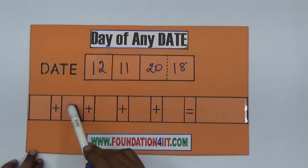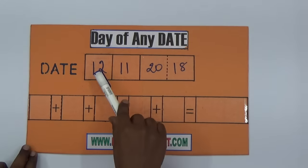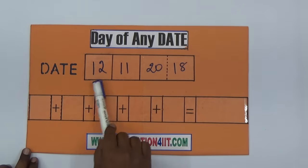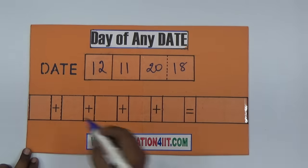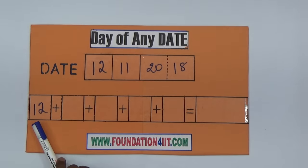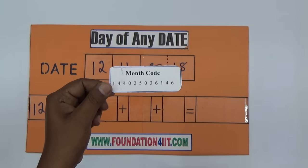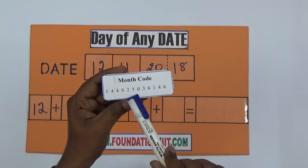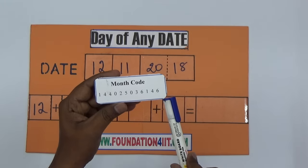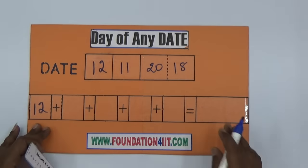See here: one plus, two plus, three plus, four plus equals five boxes. First, whatever number is in the date, write it as is. So first place 12 as it is. Now this is the month, so I'll show you the month code. The month code is: one, four, four, zero, two, five, zero, three, six, one, four, six. First is January, second is February.